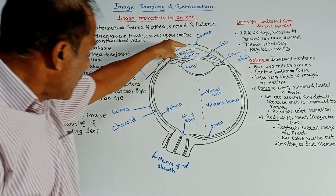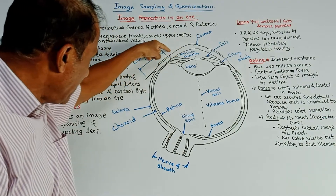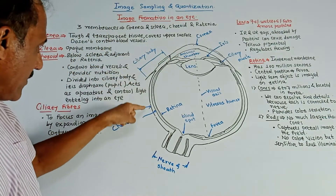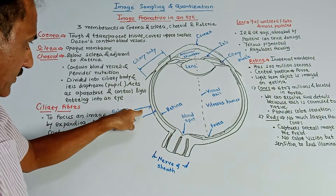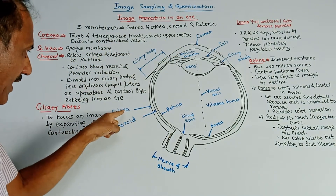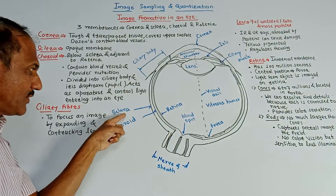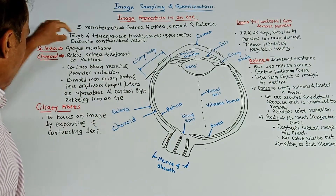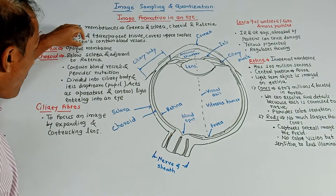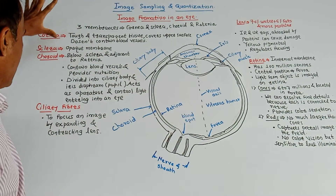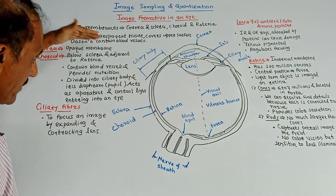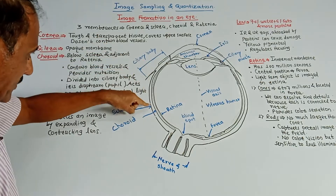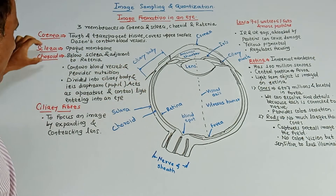First is cornea — I am talking about this external membrane. It is basically a tough and transparent tissue which covers the upper surface of an eye, but it does not contain any blood vessels. Then in continuation with this cornea, at the lower side, we have the sclera, which is an opaque membrane in continuation with the cornea.